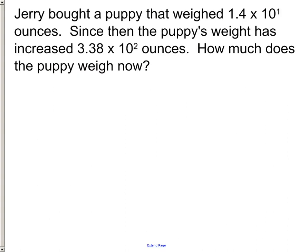Two more problems. This one, just pretend these numbers are given to you as actual numbers and figure out what you would do. Jerry bought a puppy that weighed 1.4 times 10 to the first ounces. Since then, the puppy's weight has increased 3.38 times 10 to the second ounces. How much does the puppy weigh now?